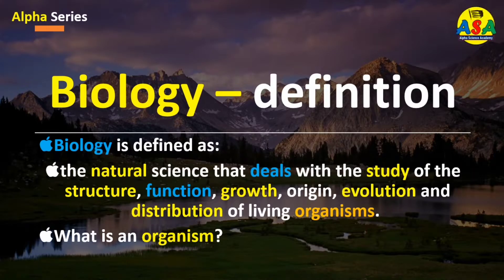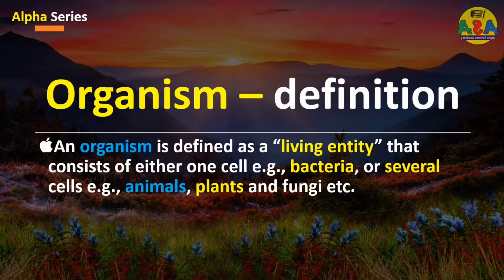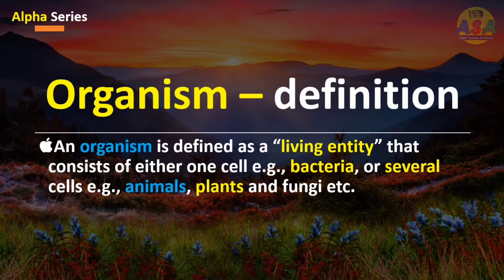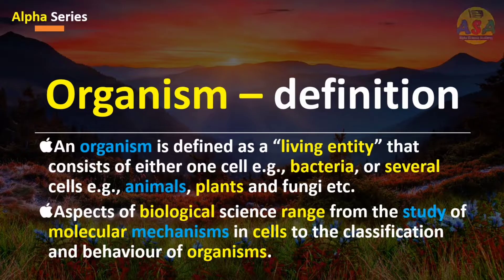The next question is: what is an organism? An organism is defined as a living entity that consists of either one cell — for example, bacteria — or several cells — for example, animals, plants, and fungi. Aspects of biological science range from the study of molecular mechanisms in cells to the classification and behavior of organisms.